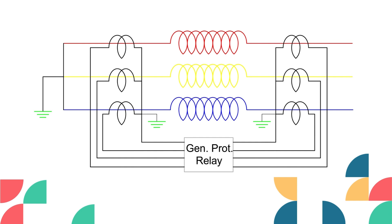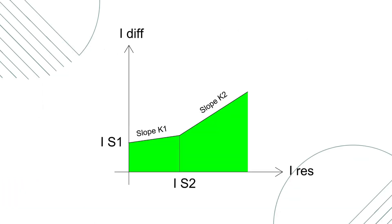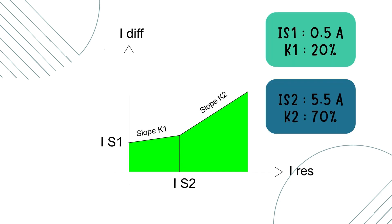Now let's understand how the numerical relay works. The working principle is the same but more simple. All CT cables are connected at specified terminals and we only need to provide the curve details — it will calculate the required setting according to the current value. We provide the values of IS1, K1, IS2, and K2. IS1 is the differential current set at 0.5 ampere, and K1 is the slope set at 20%. To prevent tripping due to external faults, the slope of the relay needs to be increased. As the value of restraining current reaches 5.5 ampere, the slope will be 70%. Nowadays the numerical relay is used everywhere.